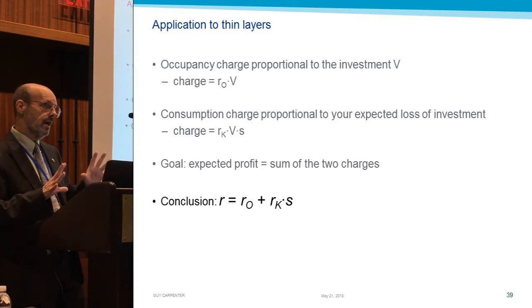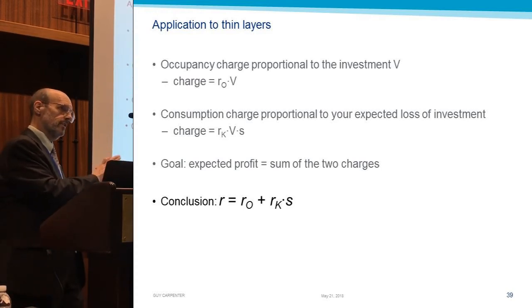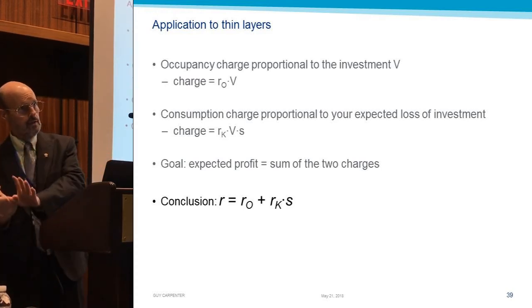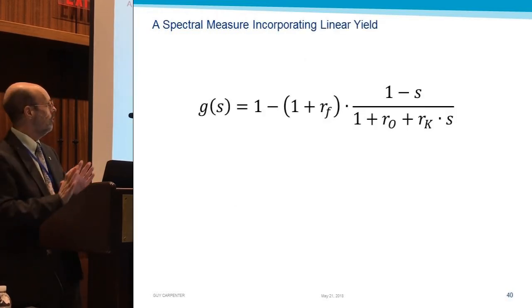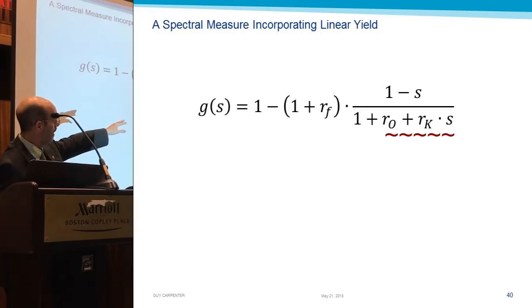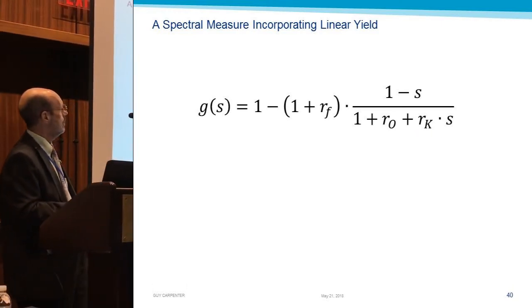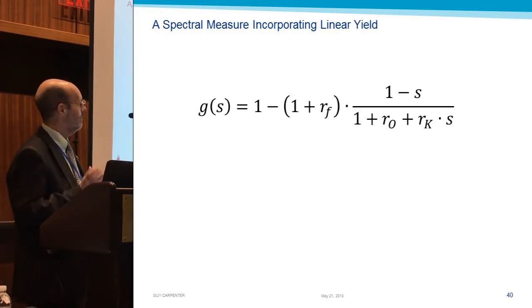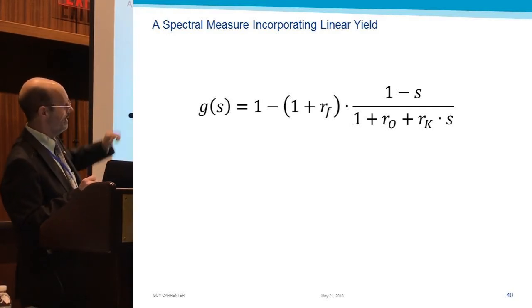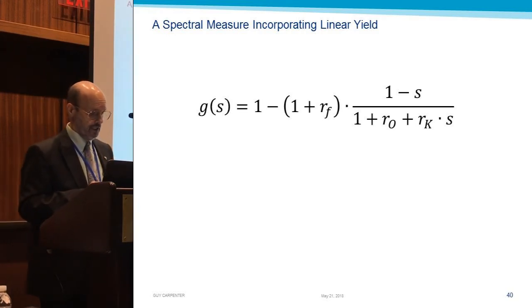Now, previously we saw how we can take G of S and S and translate that into ROE. Well, we can go backwards, and that's what we're doing here. We're going backwards from the R_O R_K S back to a G of S. Now this is a more sophisticated version. It includes the time value of money. We haven't been talking about that, so just blot that out in your mind and just think of it as 1 minus that ratio.